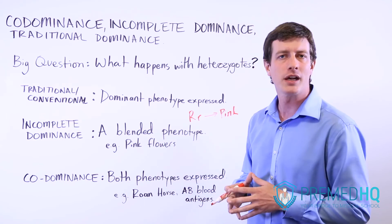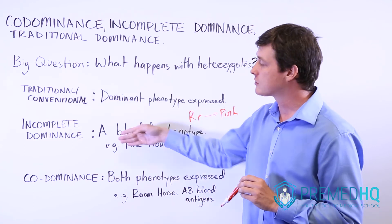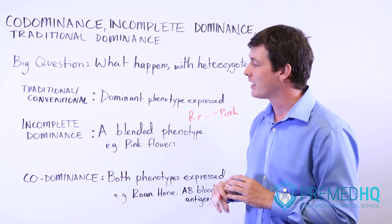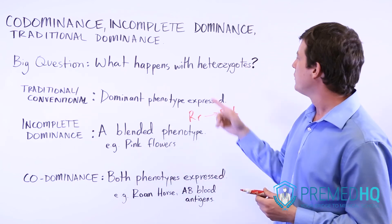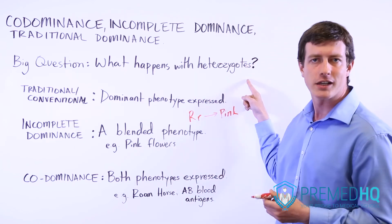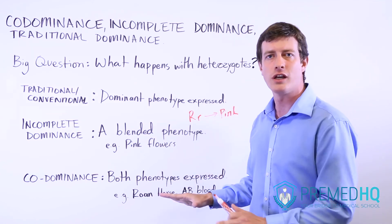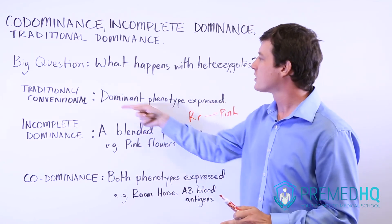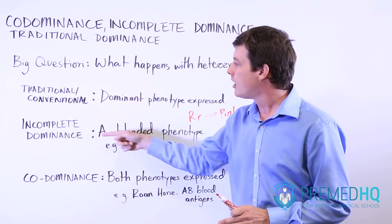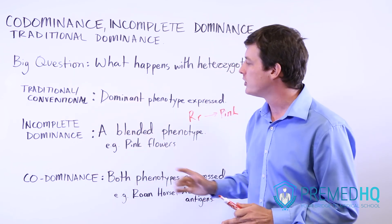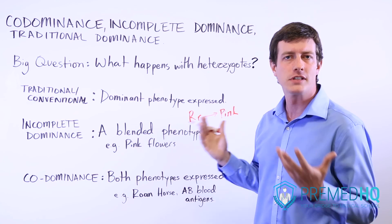Codominance is also something you encounter a lot with blood types. Be aware of these three distinctions and realize they're only relevant when you have heterozygotes. If you have homozygotes, it's clear cut and straightforward. With heterozygotes, you want to understand the dominance pattern and how it will manifest itself physically.